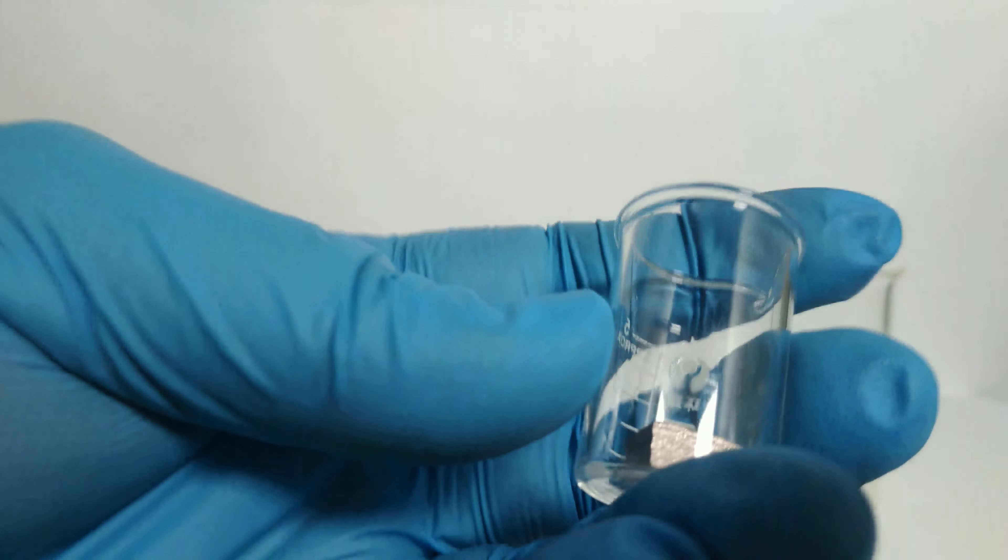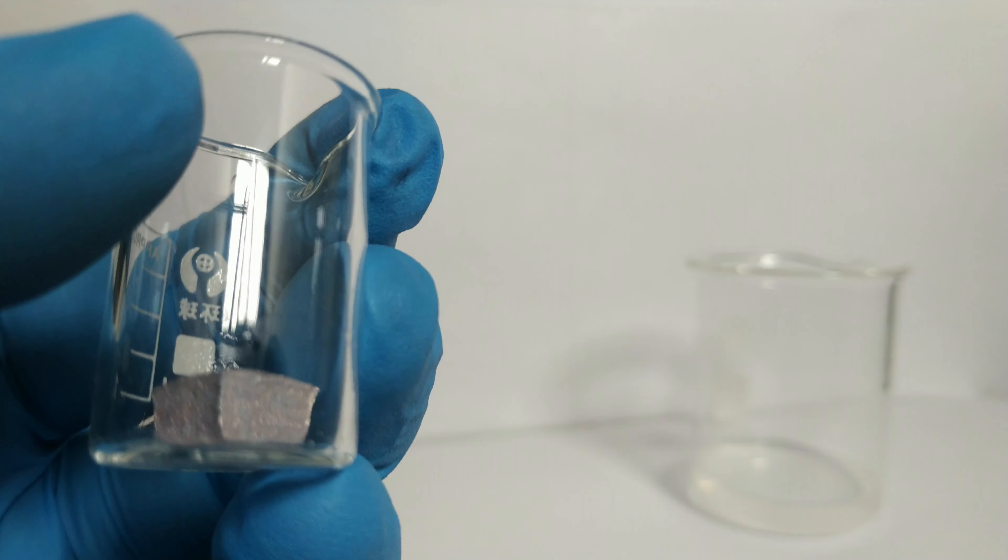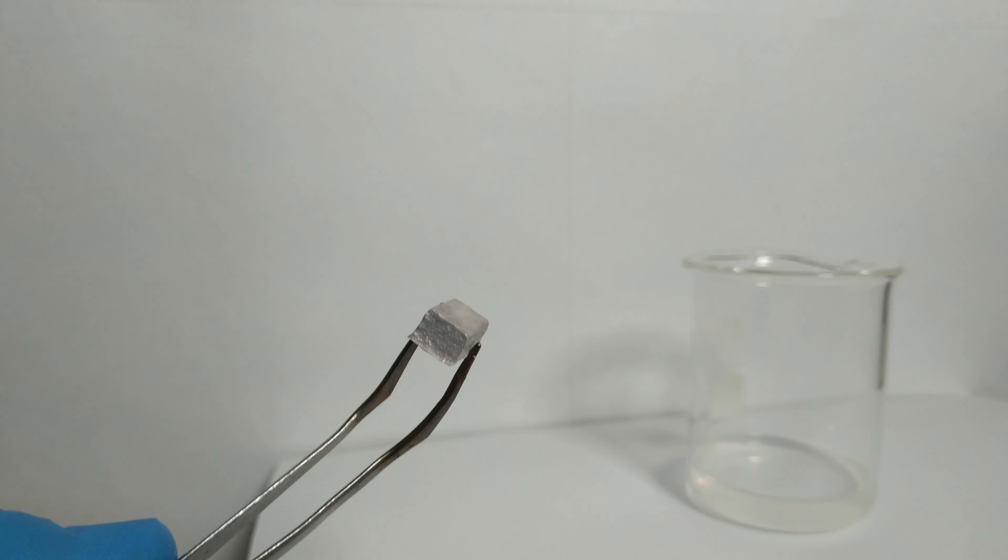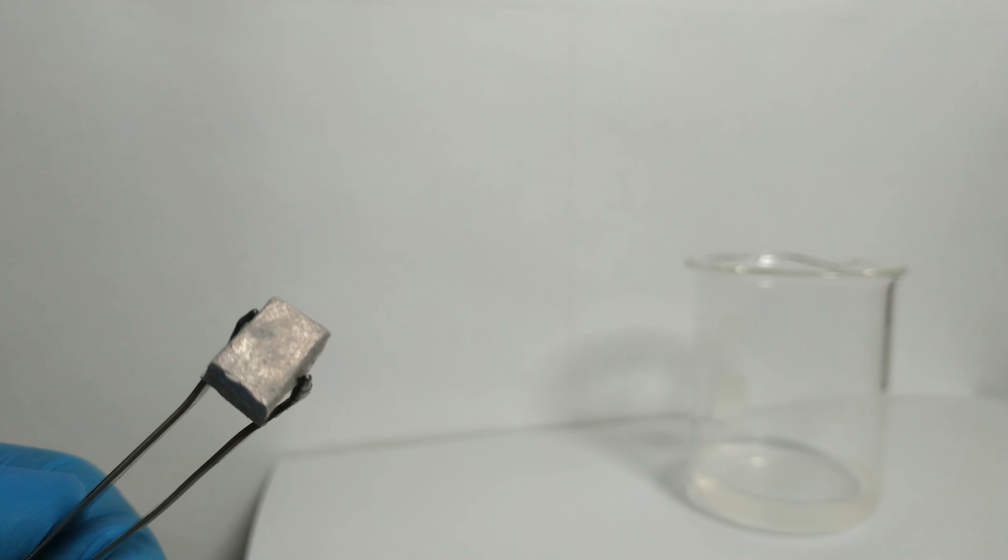Now we take a closer look at the lithium after some time in the ethanol. The surface is completely silver and freed from the layers of contamination. You can also see many small craters where the hydrogen was formed. Gradually it becomes wider and wider due to lithium ethoxide and hydroxide.